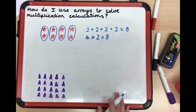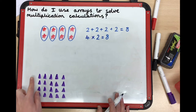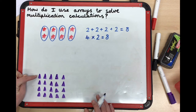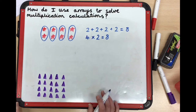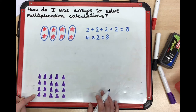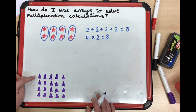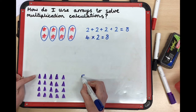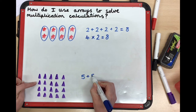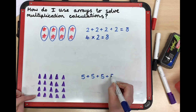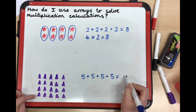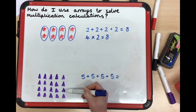Let's look at the repeated addition first. I'm going to go across this time and count the rows. In each row I have one, two, three, four, five triangles, and I've got one, two, three, four rows of those five. Let's write the repeated addition: five add five add five add five, which equals — let's count in fives — five, ten, fifteen, twenty.